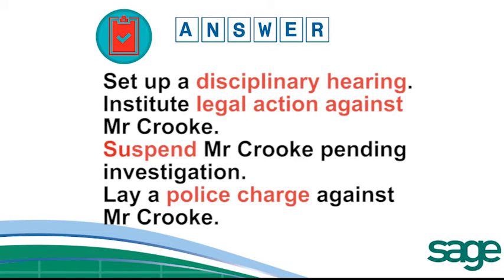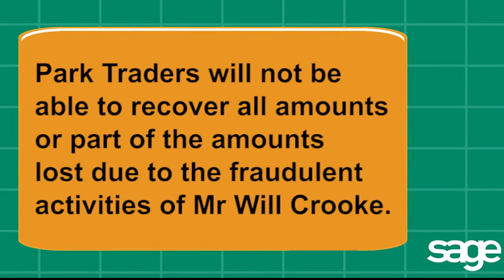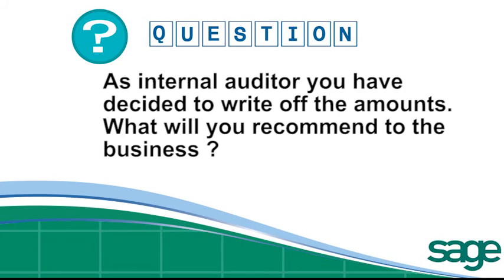But the story gets more interesting. Before action can be taken against Mr Crook, he disappears. It appears that Park Traders will not be able to recover all amounts or parts of the amounts lost due to the fraudulent activities of Mr Will Crook. As internal auditor, you have decided to write off the amounts.